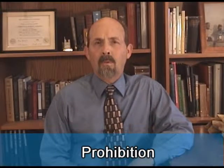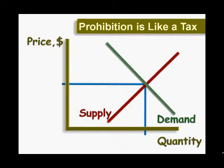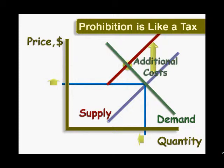As a last resort, we use prohibition to make it illegal to own, hold, move, buy, or sell something we think has inordinately bad side effects. Prohibition is effectively a large tax that takes the form of expenses to avoid getting caught and costs associated with working in a lawless environment. As with any tax, prohibition moves market equilibrium up along the demand curve, leading to higher prices and less consumption than before.